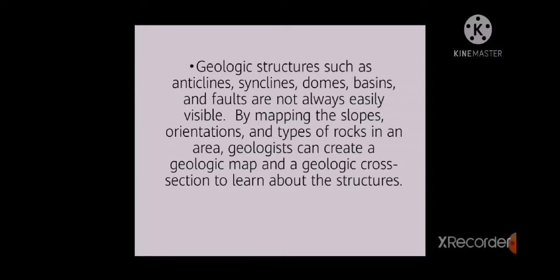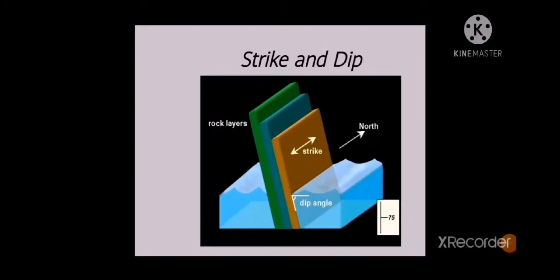A bathymetric map is like a topographic map, with a contour line representing depth below sea level rather than height above. Numbers are low near sea level and become higher with depth. Study of Structures Geologic Map. Geologic structures such as anticlines, synclines, domes, basins, and faults are not always easily visible. By mapping the slopes, orientations, and types of rocks in an area, geologists can create a geologic map and geologic cross-section to learn about the structures.